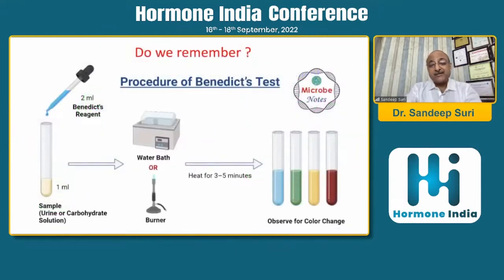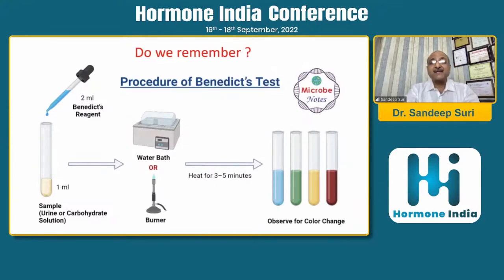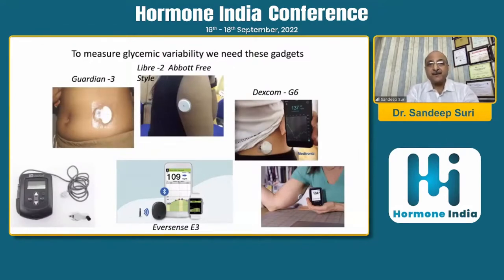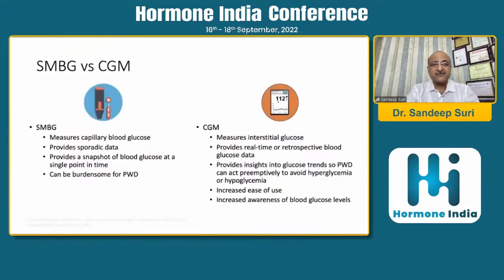From the age-old first-year biochemistry Benedict test for urine glucose color changes to today - Dr. Amit clearly showed that Guardian 3, Libre 2, Dexcom G6, and even newer sensors are already coming up. We are all using this technology for looking at glycemic variability. These are parts of CGMS.